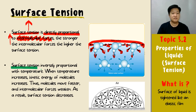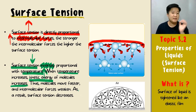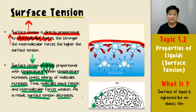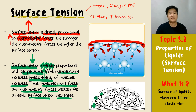The second factor affecting surface tension is temperature, and they are inversely proportional. When temperature is high, kinetic energy increases and molecules move faster. The constant movement weakens the intermolecular forces, so the surface tension decreases. Therefore, surface tension is stronger with a stronger intermolecular force of attraction, and weaker when temperature increases.